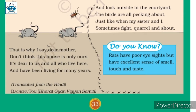And look outside in the courtyard, the birds are all pecking about, just like when my sister and I sometimes quarrel. Aur mother, angan mein dekho, yeh birds kaisi baat kar rahe hain jaise mein aur meri sister aapas mein ladte hain. Yahaan par aap dekh sakti hain mice, mosquito, spider, lizard, ants and birds — yeh ghar insubka bhi hua. That is why I say, dear mother, don't think this house is only ours; it's dear to us and all who live here and have been living for many years.